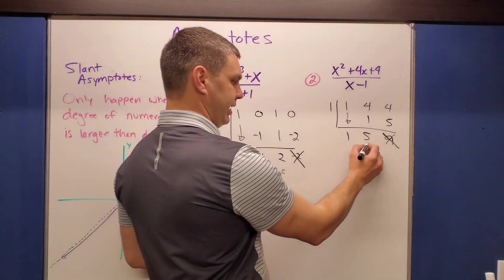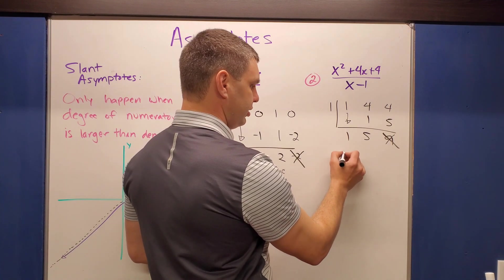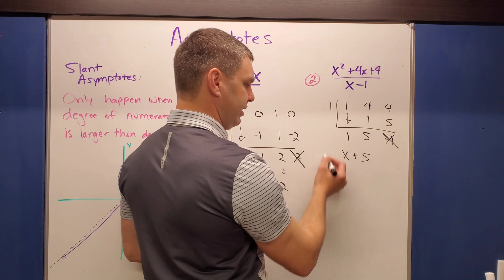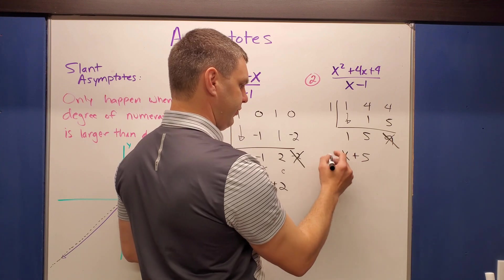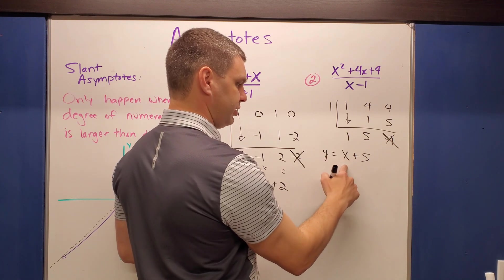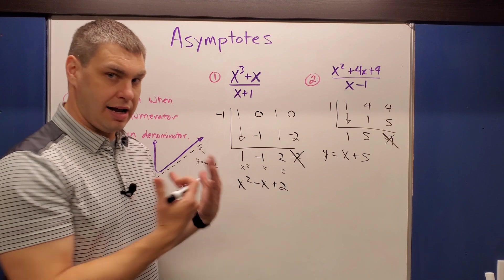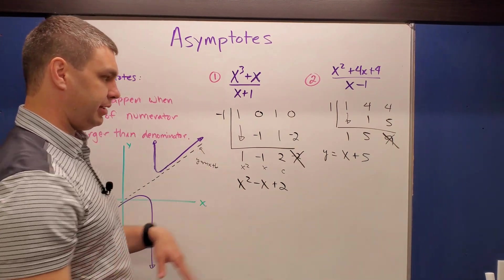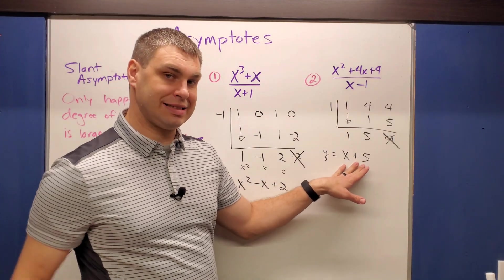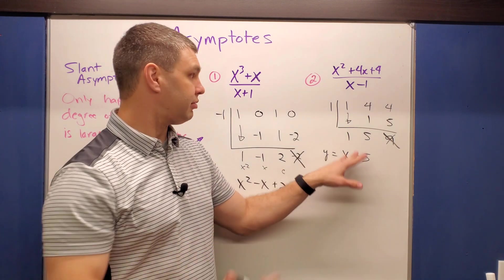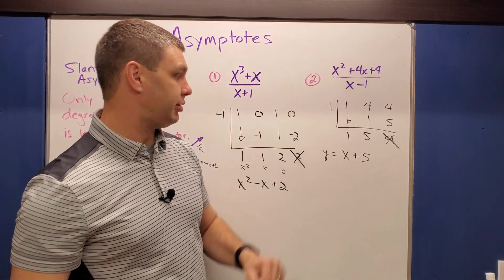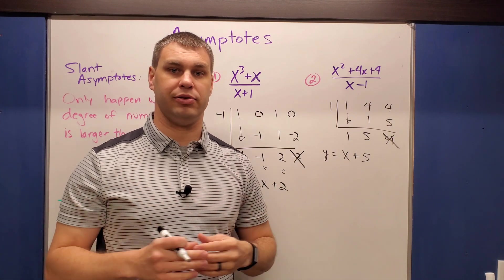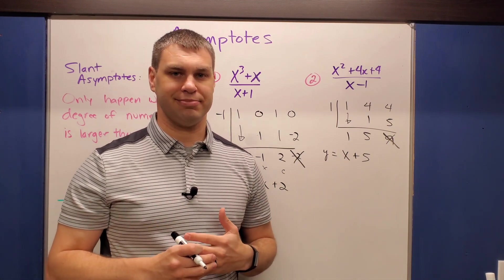Using just the non-remainder terms, the result is x plus five. Written as y equals x plus five, it's in the form y equals mx plus b — so this line is the slant asymptote for this problem. Now we know vertical, horizontal, and slant asymptotes. Let's graph a few of these.